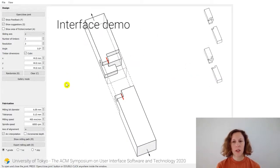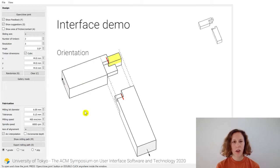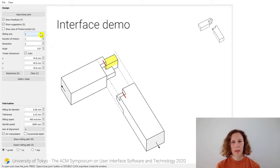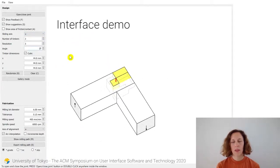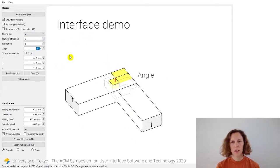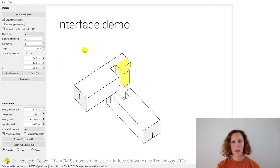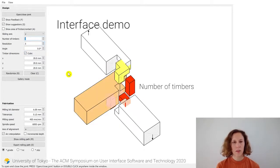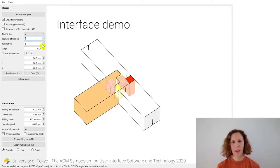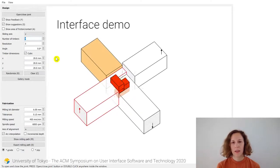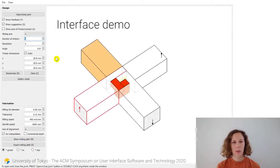The user can change the orientation of a timber by dragging its body. The user can also change the sliding axis, the angle of intersection, the timber dimensions, the voxel resolution, the number of connecting timbers, and more. You might already have noticed the colorful lines and fills that appear. This is real-time graphical feedback about the joint performance.